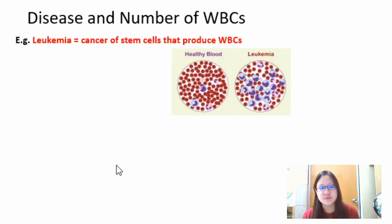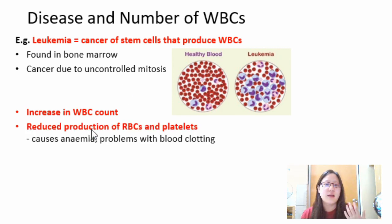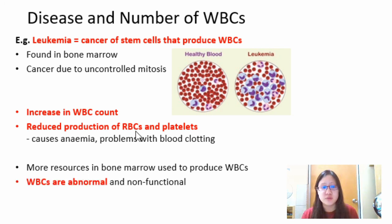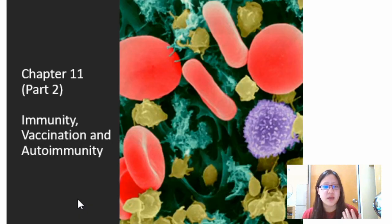Leukemia is the cancer of stem cells that produce white blood cells. We detect it by seeing an increase in white blood cell count, which seems counterintuitive, but cancer causes uncontrolled mitosis. However, there is also reduced production of red blood cells and platelets, causing anemia and clotting problems. The elevated white blood cells are abnormal and not functioning properly, so the person becomes immunosuppressed and more susceptible to infections.